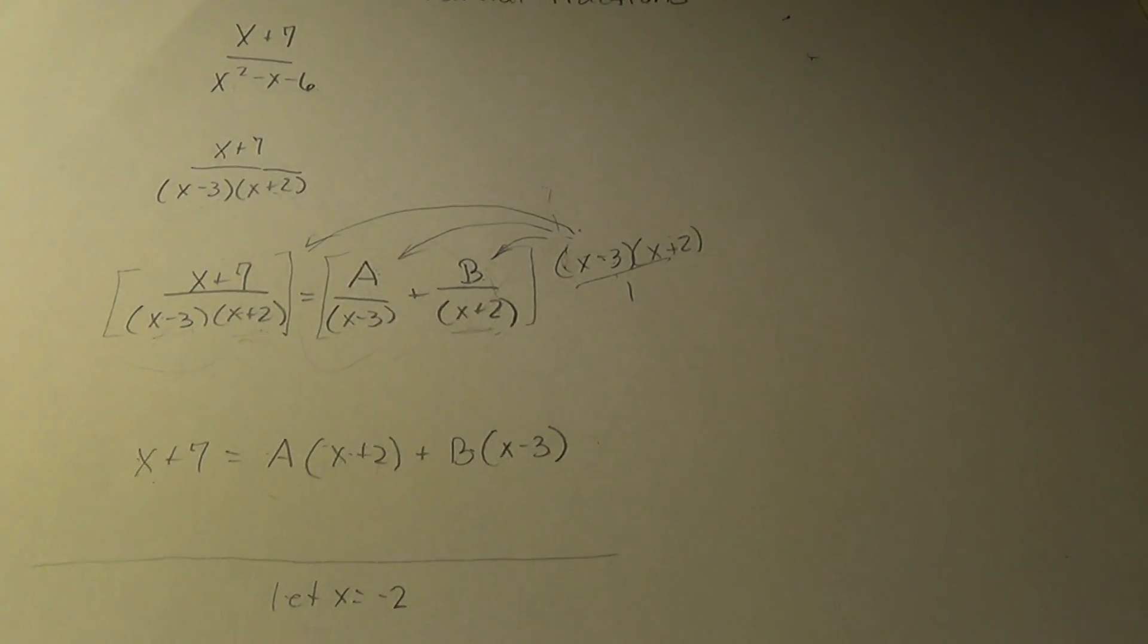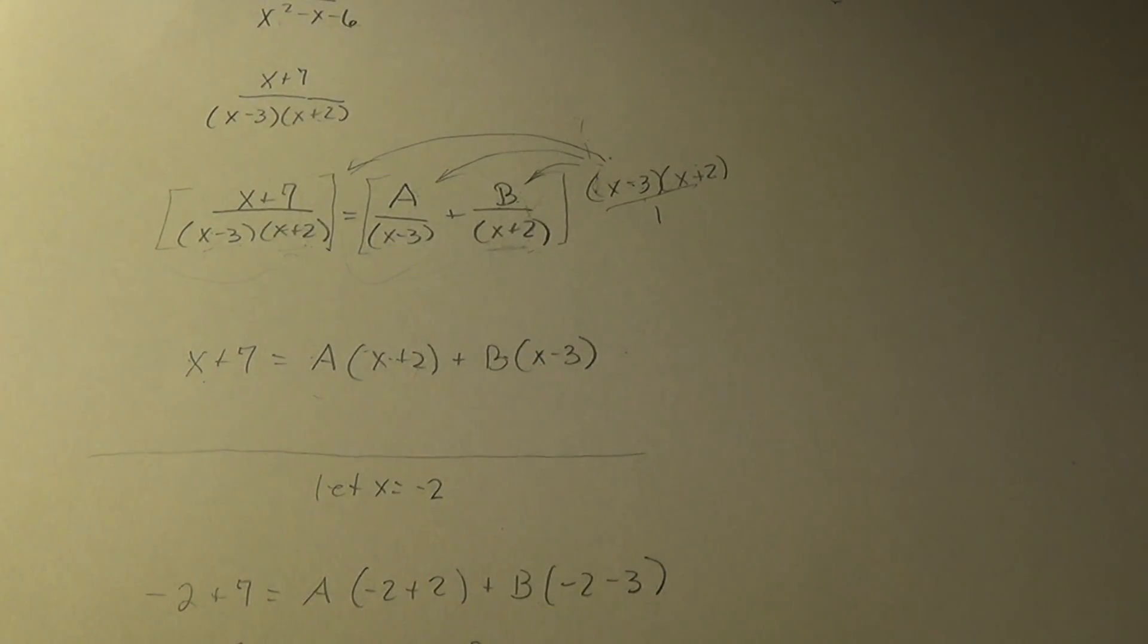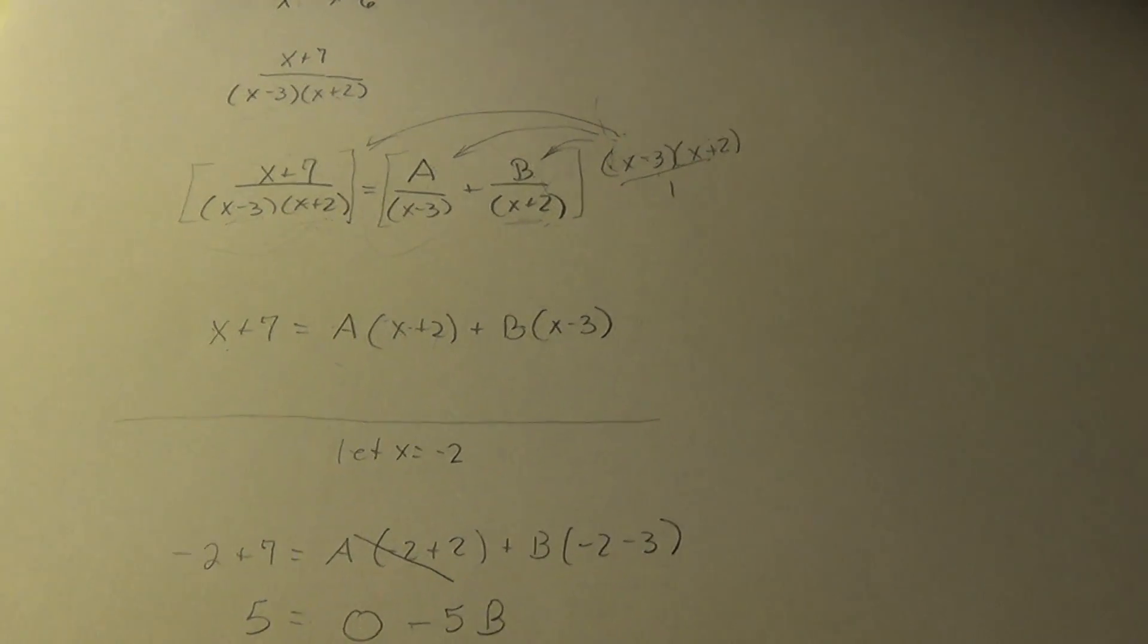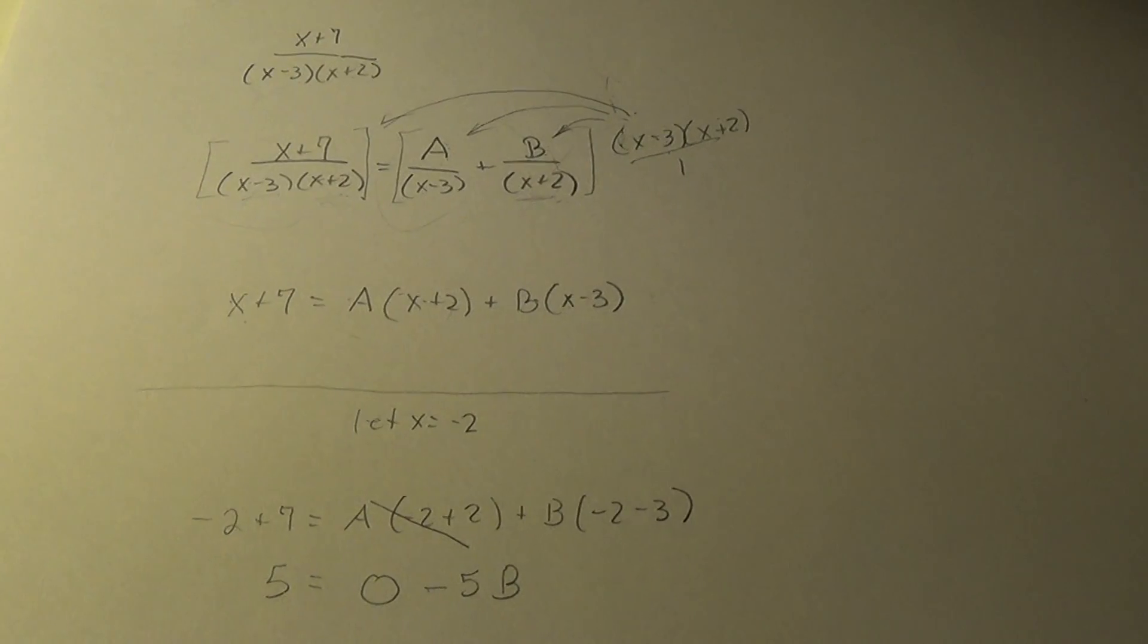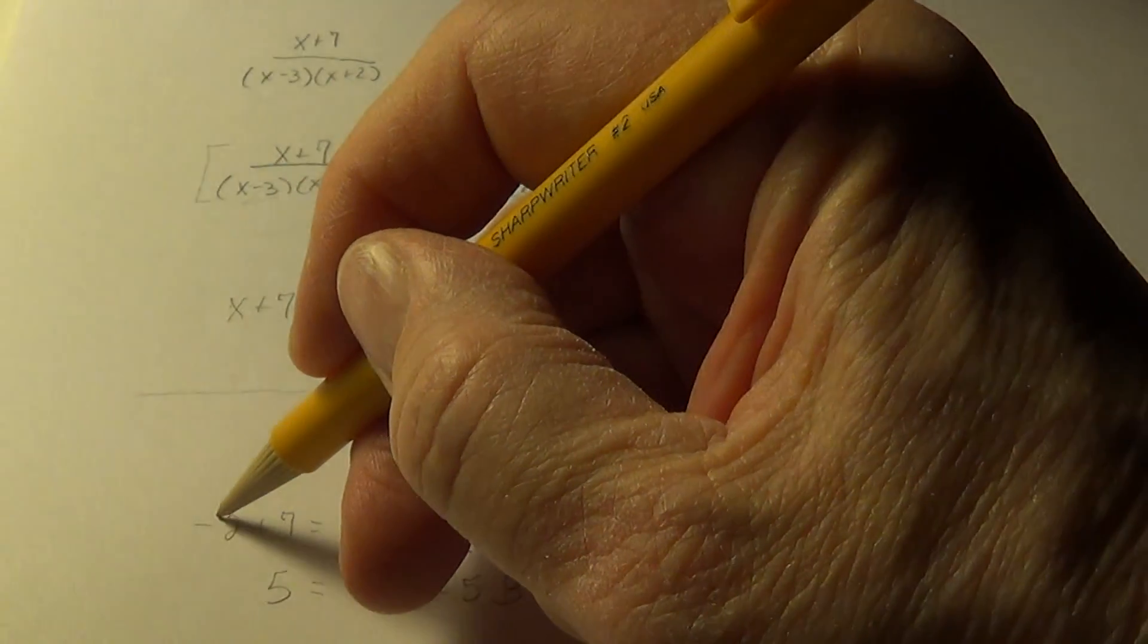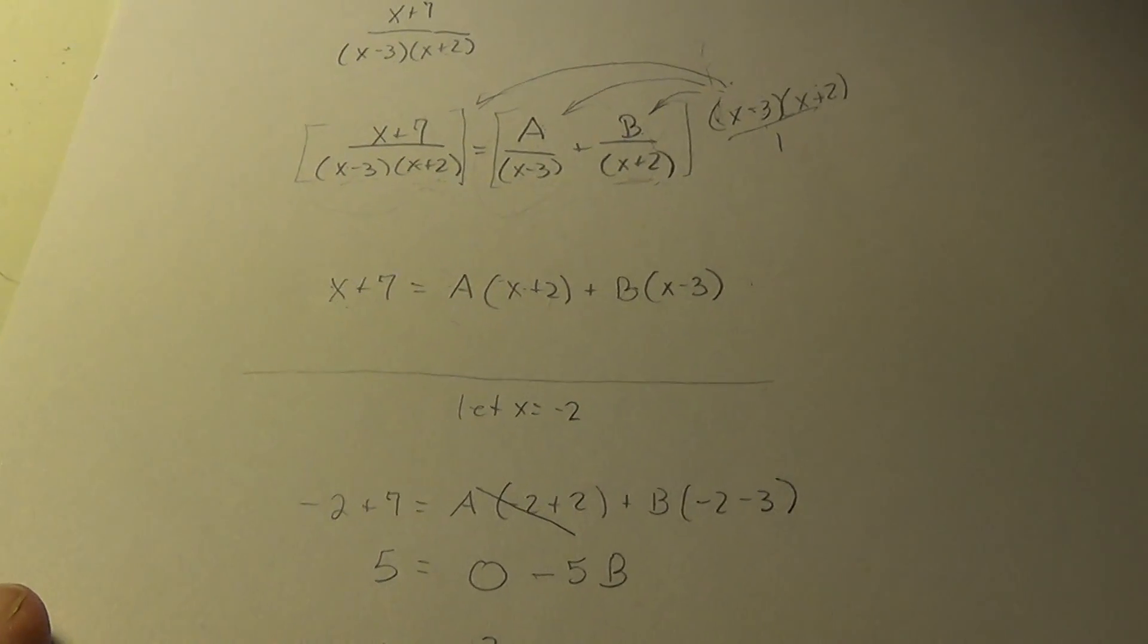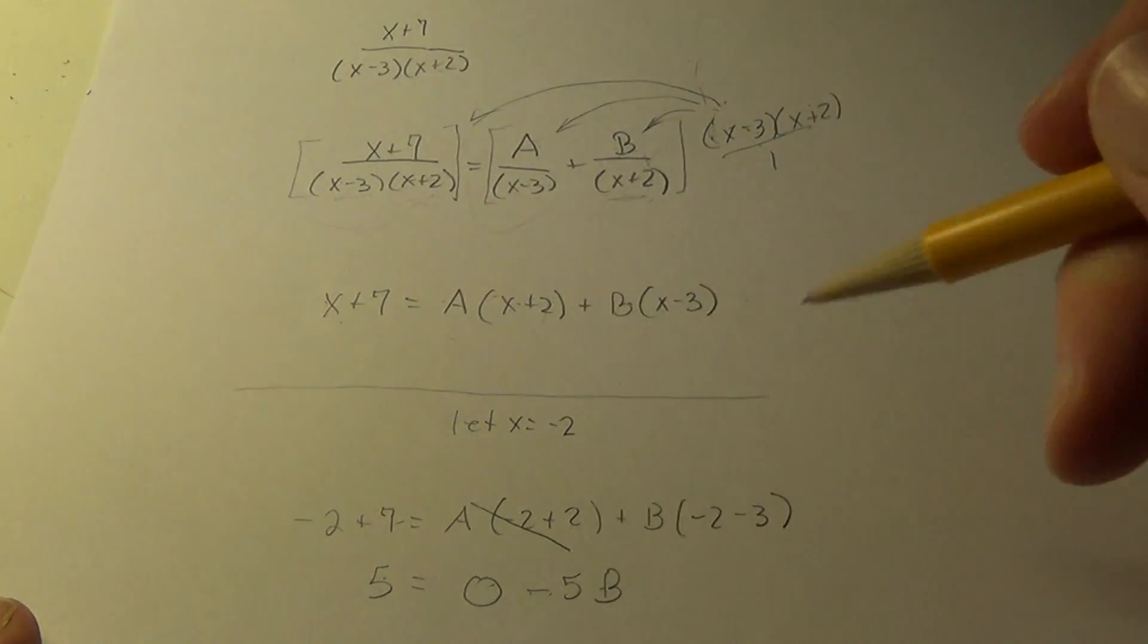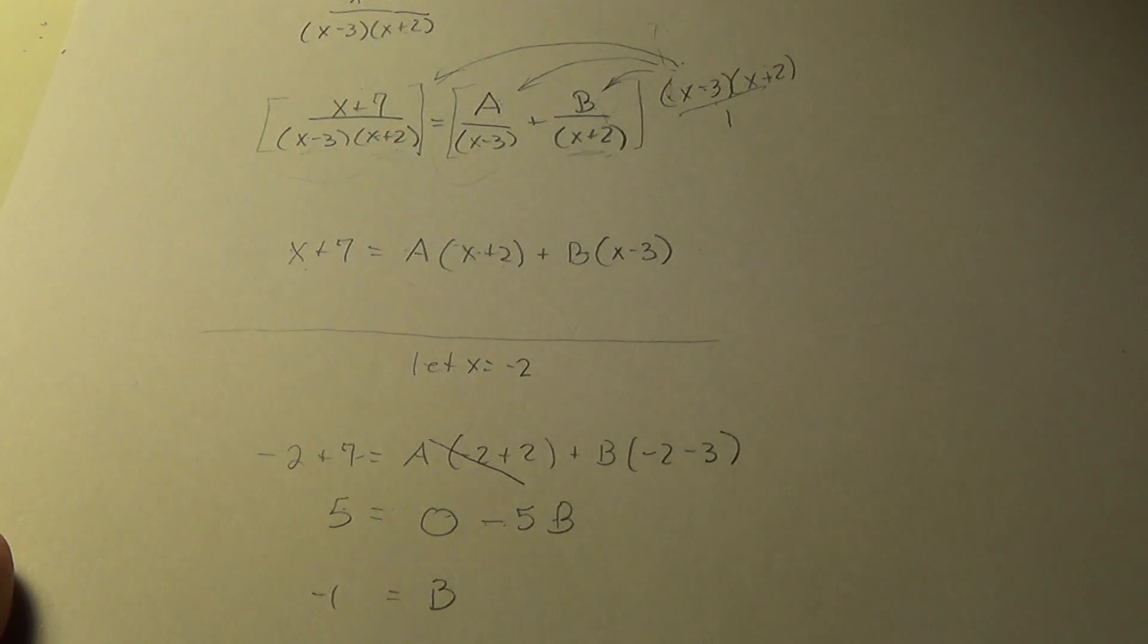Notice the a term zeros out and it leaves me. This is minus 2 plus 7. So that gives me 5 equals minus 5b. Divide by minus 5 and I get b equals minus 1.